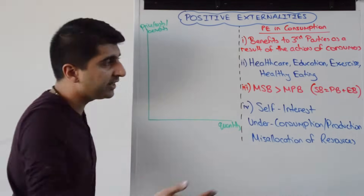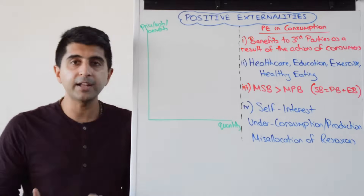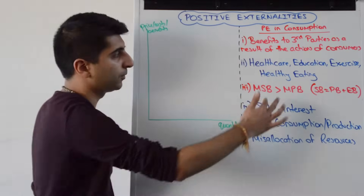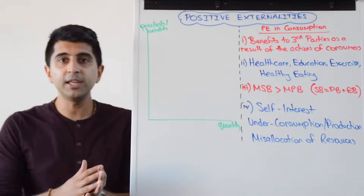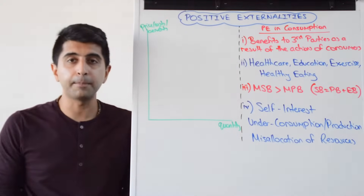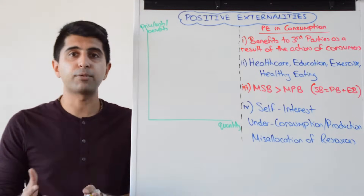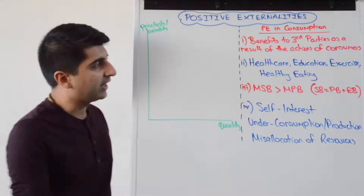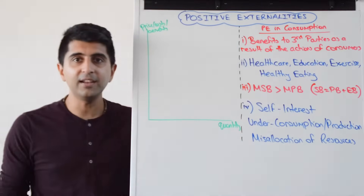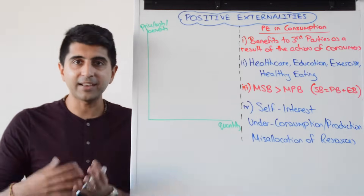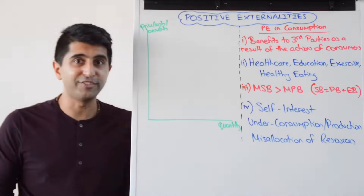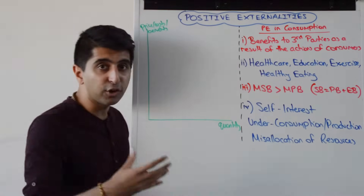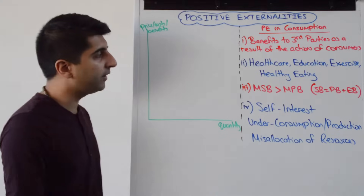Take exercise and healthy eating. If those are consumed — if exercise is consumed or healthy foods are consumed — the third party could be employers. Employers benefit from higher productivity of their workers. If people are more healthy, if they're eating well and exercising well, they're going to be at work more often, producing more. So the third party there could be employers that benefit.